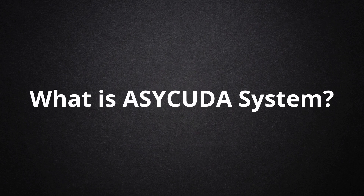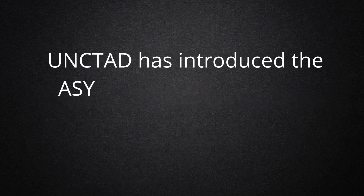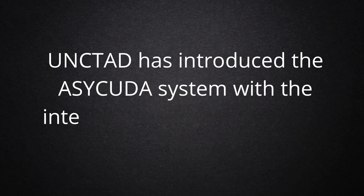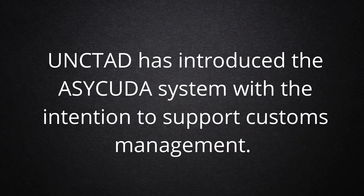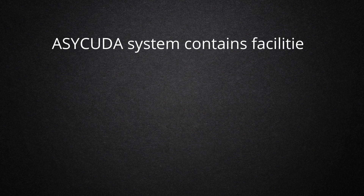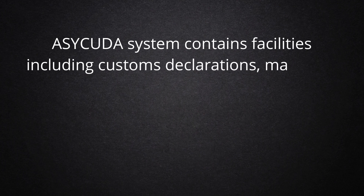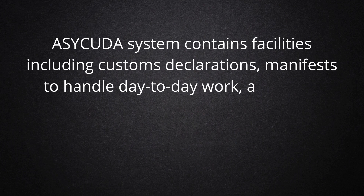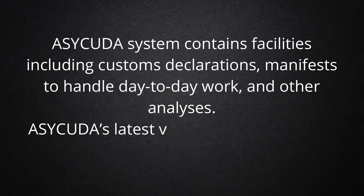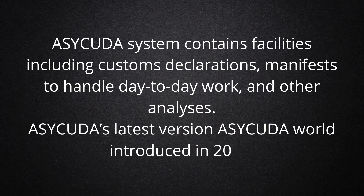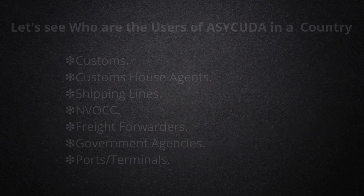What is the Asikuta System? UNCTAD has introduced the Asikuta System with the intention to support customs management. The Asikuta System contains facilities including customs declarations, manifests to handle day-to-day work, and other analyses.